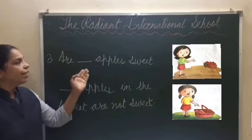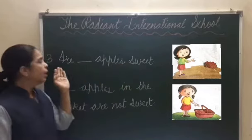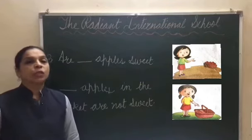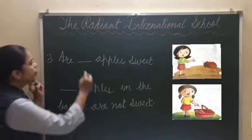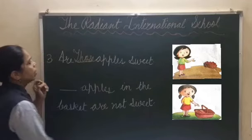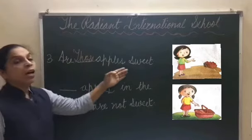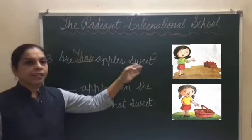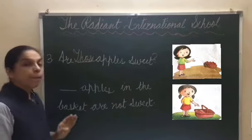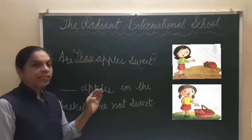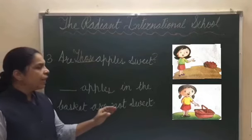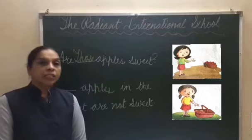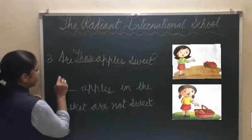Number 3 (apples): Are blank apples sweet? In this picture, the girl is pointing at apples that are a little far from her, so we use 'those': 'Are those apples sweet?' It is a question, so we add a question mark. Next: Blank apples in the basket are not sweet. Here the girl is showing apples that are near to her, so we use 'these': 'These apples in the basket are not sweet.' Notice that after the demonstrative adjective, there is always a noun.